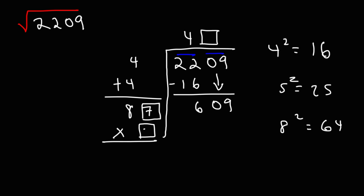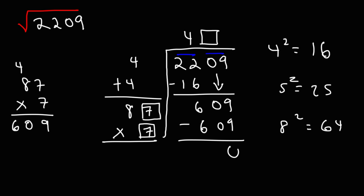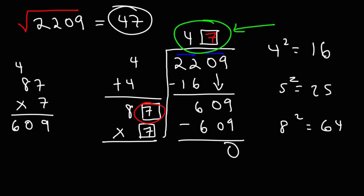87 times 7: 7 times 7 is 49, carry the 4; 8 times 7 is 56, plus 4, that's 60. So 87 times 7 gives us 609, and we have a zero remaining. The number in the box goes in the answer. The final answer is whatever we see here — so the square root of 2209 is 47. And that's how you can find it using the division method.